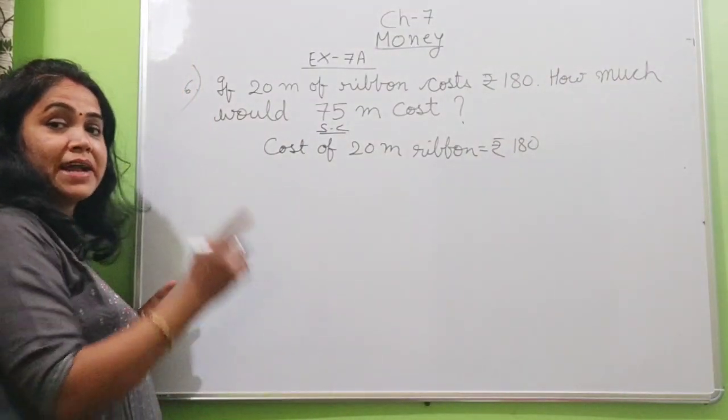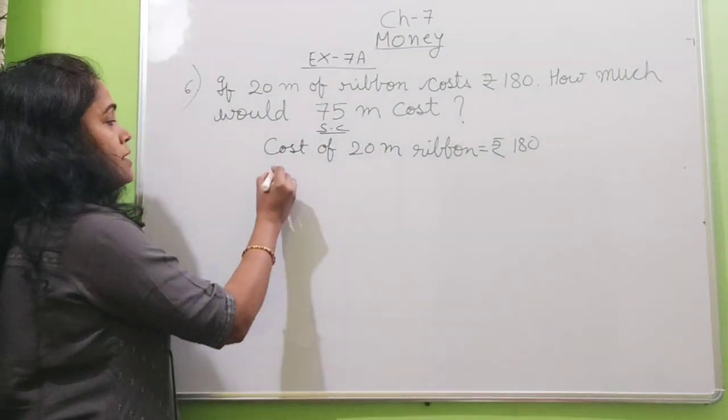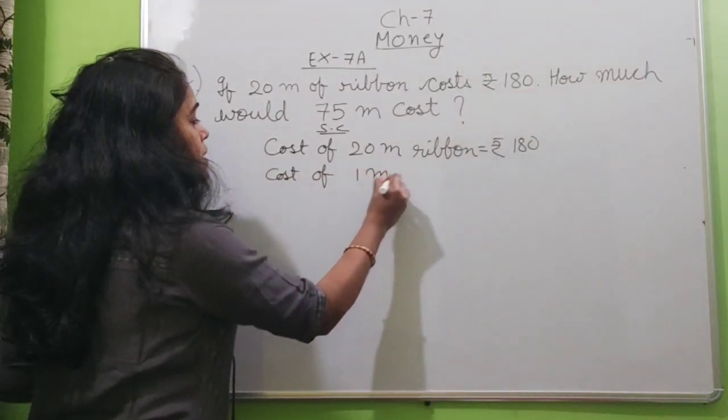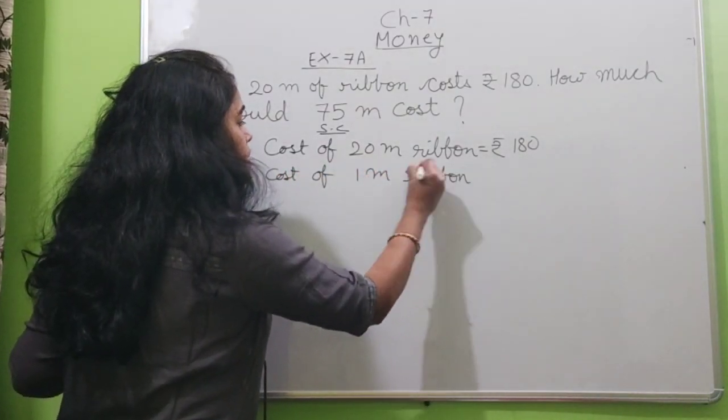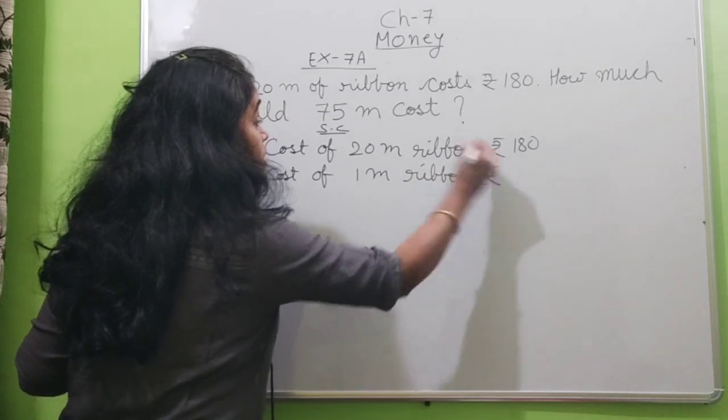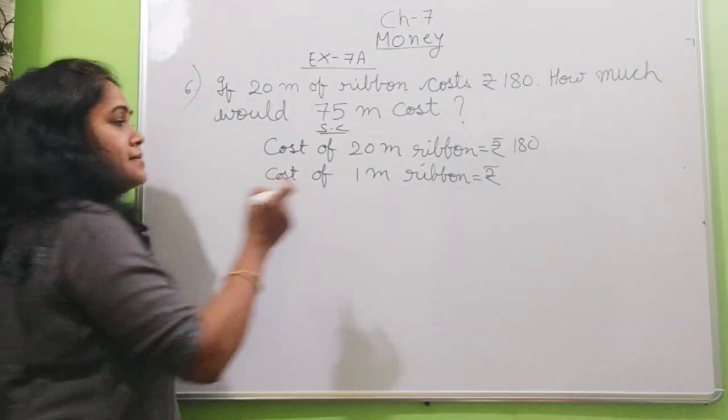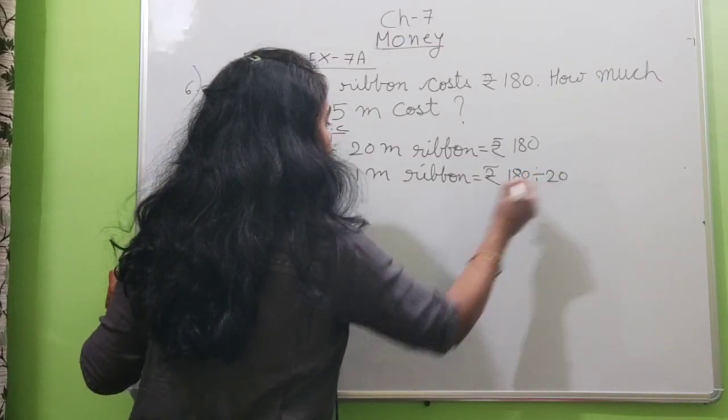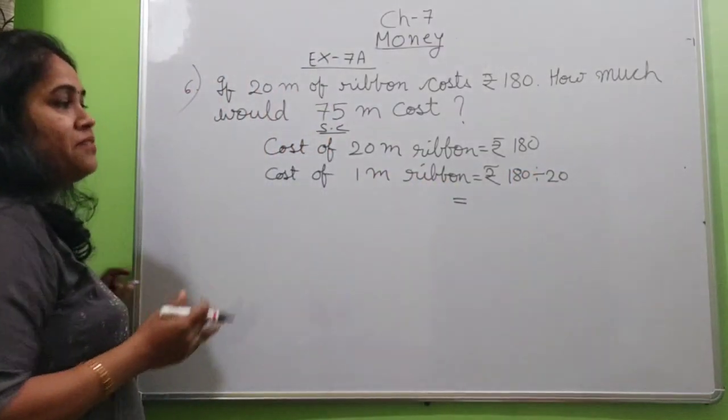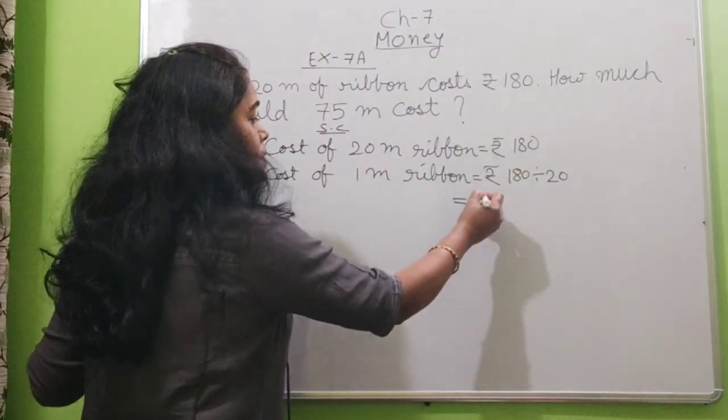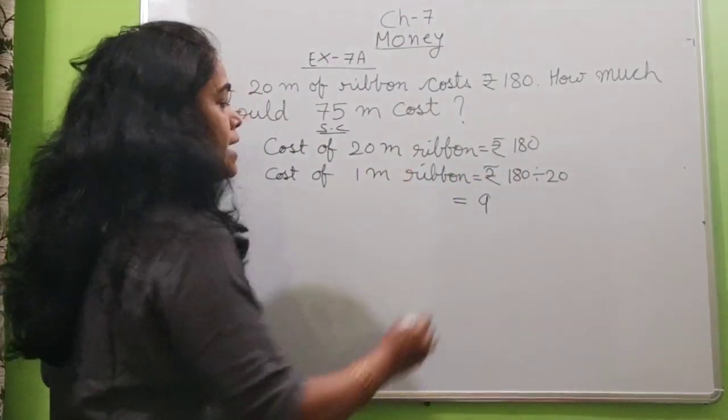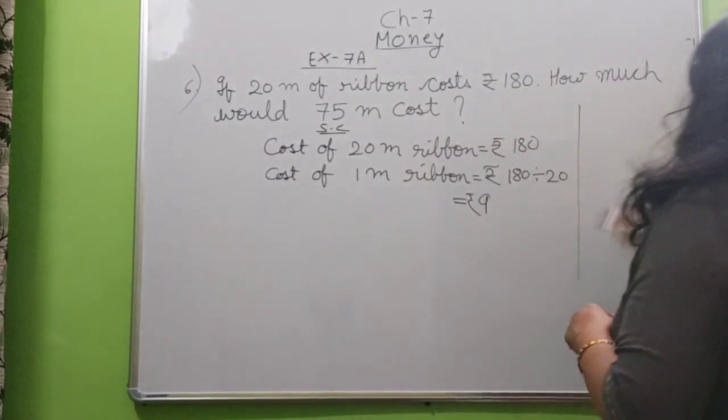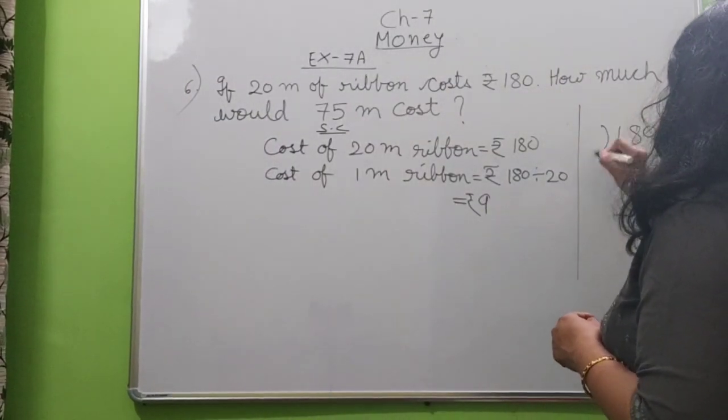So first we will find cost of 1 meter ribbon is equal to, for this we will not multiply because it will be less. So 180 divided by 20. Now very simple division. 2 into 9 is 18 and 0, 0 will be cancelled. So it will be 9. And if you are not able to do, you can divide 180 and 20.